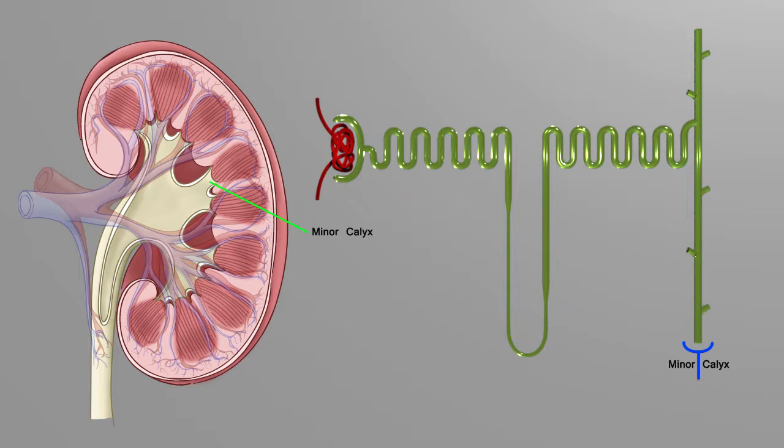The minor calyx will empty into the major calyx. And you can see that this is a cup-like structure that is going to combine more than one minor calyces.